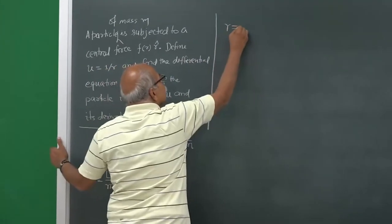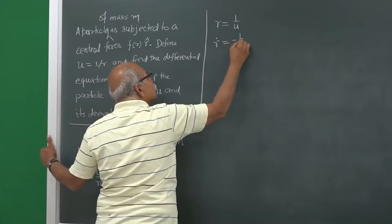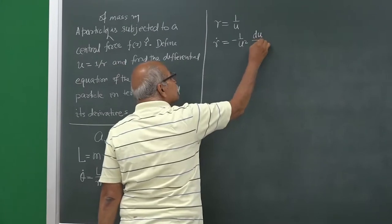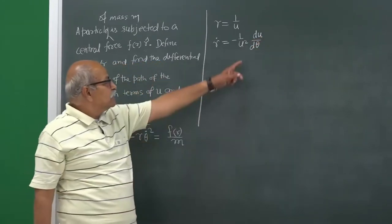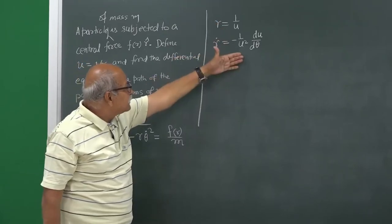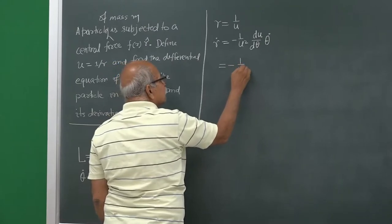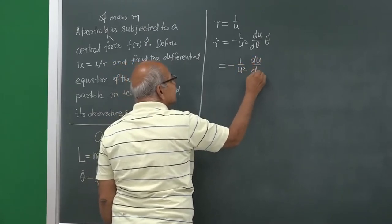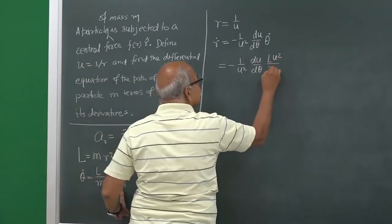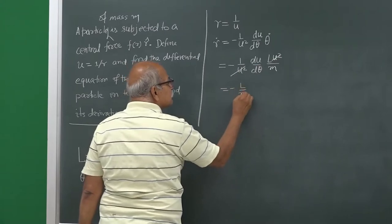Now for r-dot: since r = 1/u, differentiating with respect to time gives ṙ = −(1/u²)·(du/dθ)·θ̇. Substituting θ̇ = L·u²/m, the u² cancels with the 1/u², and we get ṙ = −(L/m)·(du/dθ). This is the advantage of working in u — things simplify nicely.